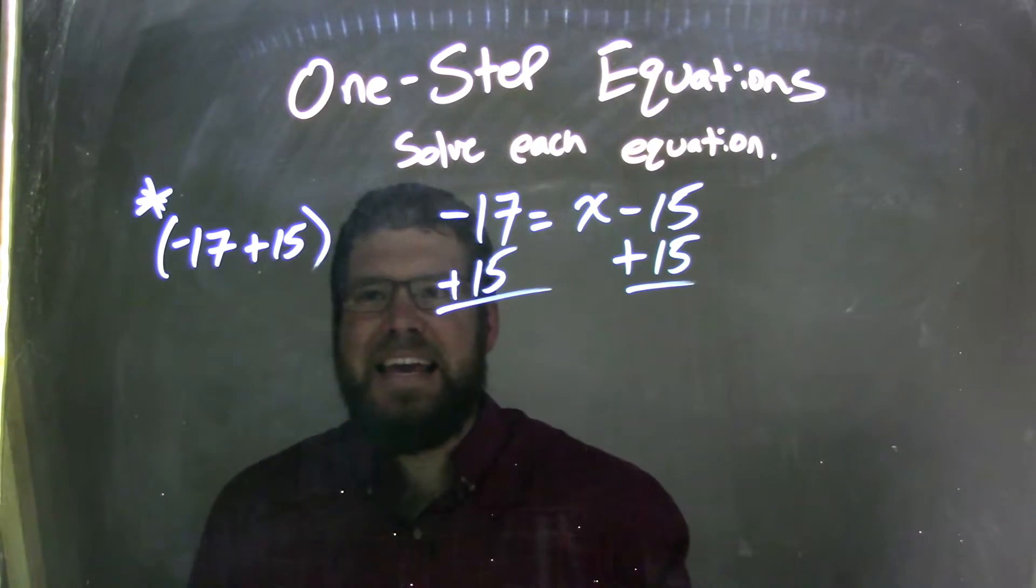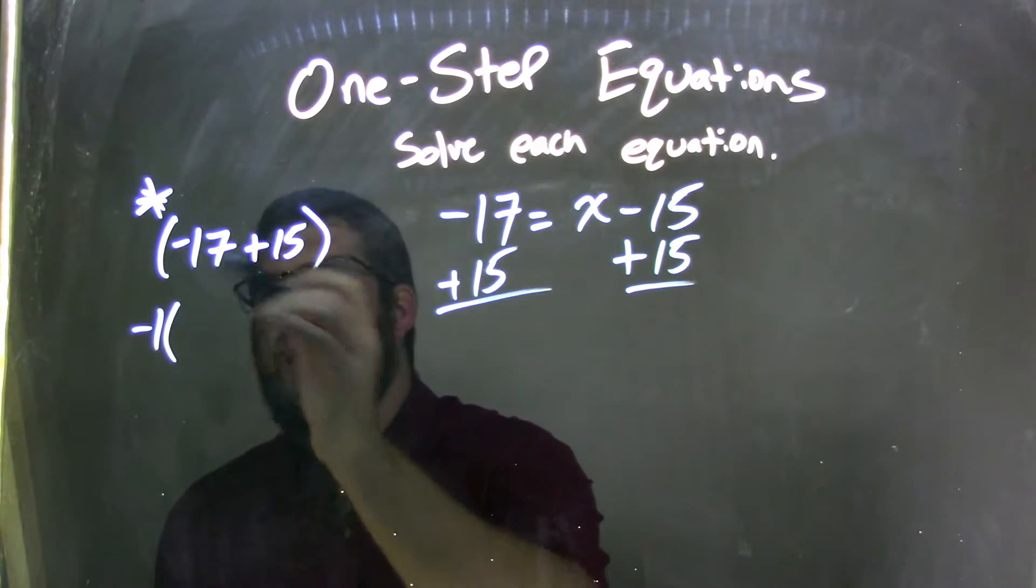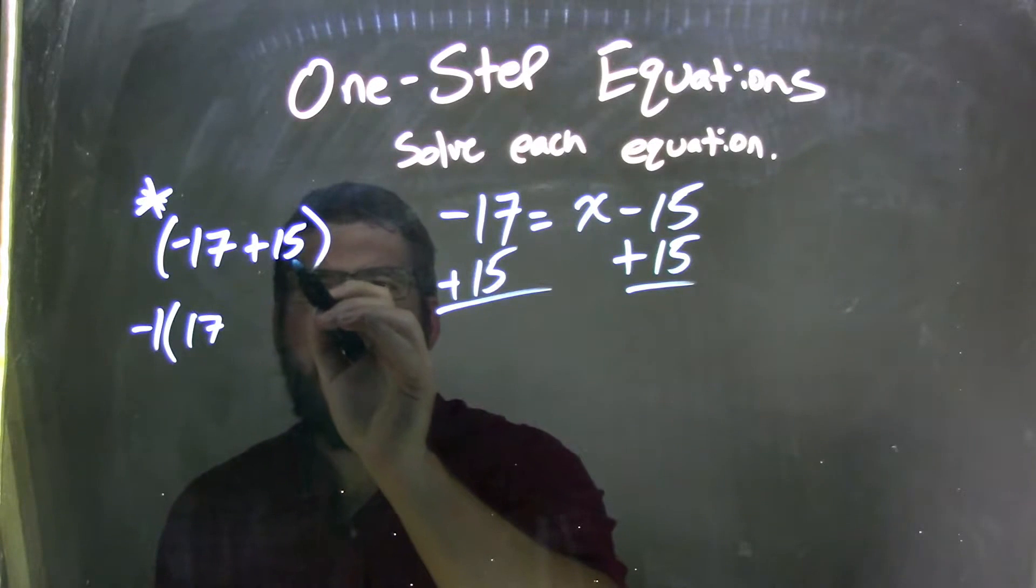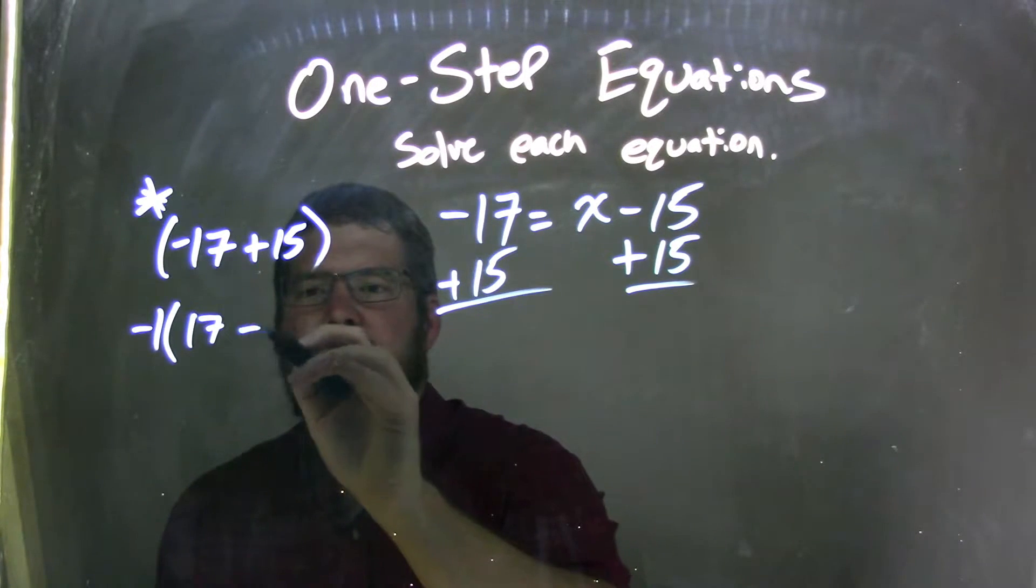Well, negative 17 plus 15, I can pull out a negative 1 from that. I pull out a negative 1 from this and I have a positive 17, and then if I pull out a negative from this, positive 15 becomes negative 15, so minus 15.